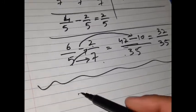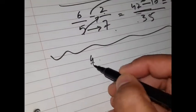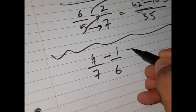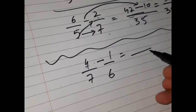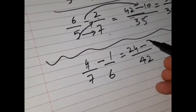Another question I will do here now. Let's say 4 over 7 minus 1 over 6. Now, 7 times 6 is 42. 6 times 4 is 24, minus 7 times 1 is 7.